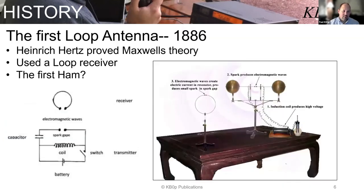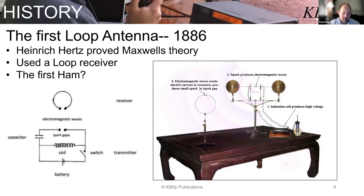This could very possibly be the first loop antenna that was developed, in 1886. Hertz did an experiment to prove Maxwell's theory. What he did is he took a loop antenna — you can see a picture of the loop antenna here, actually set up in a museum — and you can see he has a spark gap transmitter.